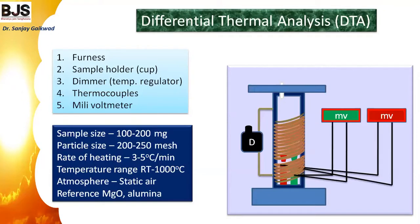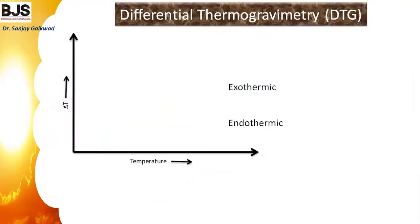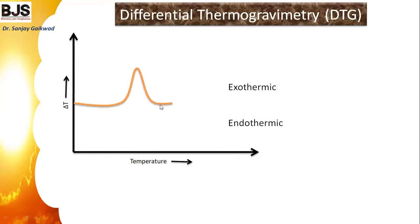In an exothermic reaction, heat is evolved from the sample, causing a sudden temperature change. In an endothermic reaction, heat is absorbed. In the DTA graph, the temperature difference is plotted versus increasing temperature. If the graph rises to the upper side — the difference increases — that indicates an exothermic reaction. If the temperature difference decreases, that is an endothermic reaction. Such reactions can be studied with differential thermal analysis.